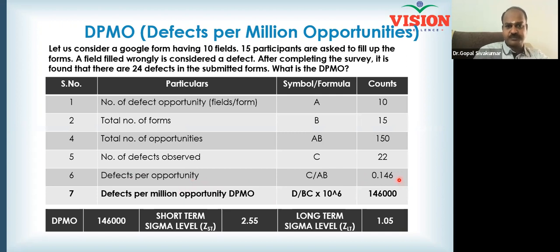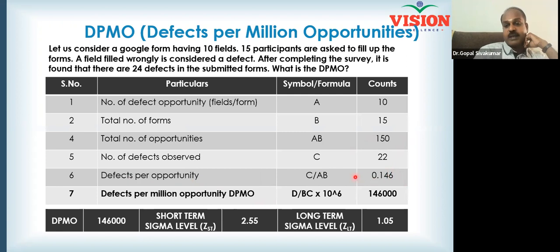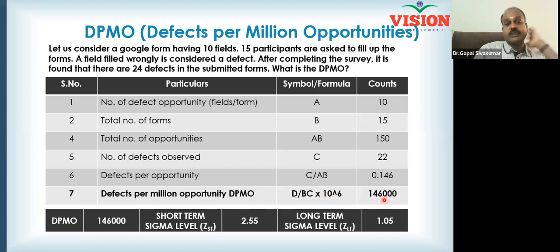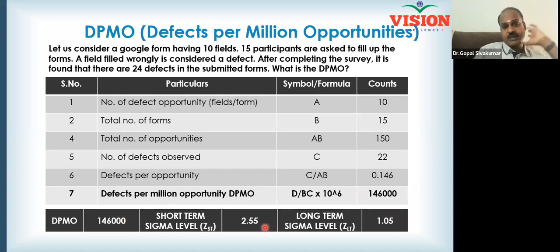Defects per opportunity is 0.146. If you have 1 million opportunities, to get defects per million opportunity, you multiply defects per opportunity by 1 million. So 0.146 multiplied by 1,000,000 gives you approximately 146,000 DPMO. From 1.66, you get to 2.55 — this is a short term sigma level of 2.55, which corresponds to 6 Sigma.